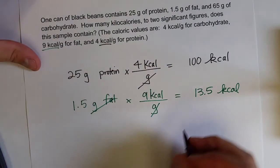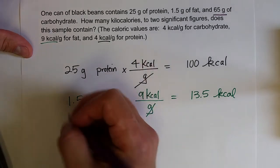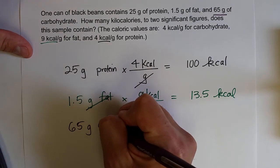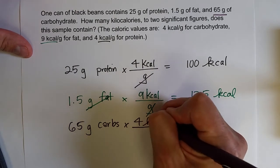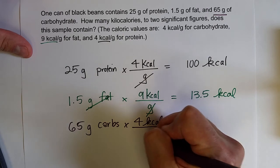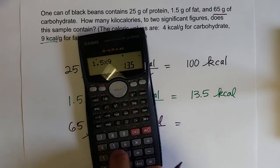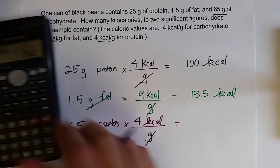And then finally we've got 65 grams of carbohydrates. So 65 grams of carbs, which also contain 4 kcals per gram. That cancels out. And so 65 times 4 equals 260.